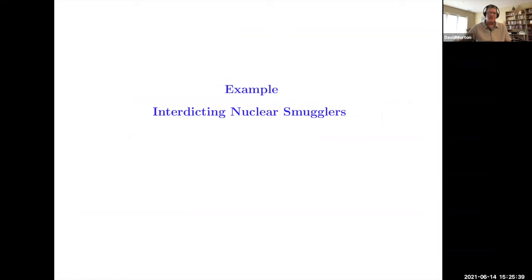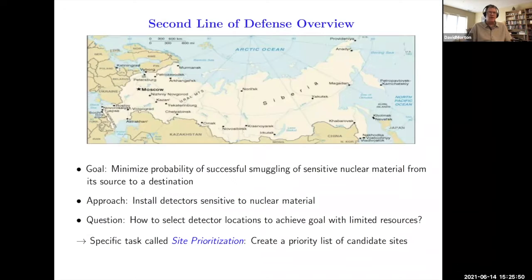The first example is something I worked on in terms of interdicting nuclear smugglers. There was a U.S. Department of Energy program called Second Line of Defense, which initiated not long after the fall of Soviet Union. The concern had to do with loose nuclear material in former Soviet states. The goal of this SLD program was to minimize the probability of a successful smuggling attempt of sensitive nuclear material from source to destination.